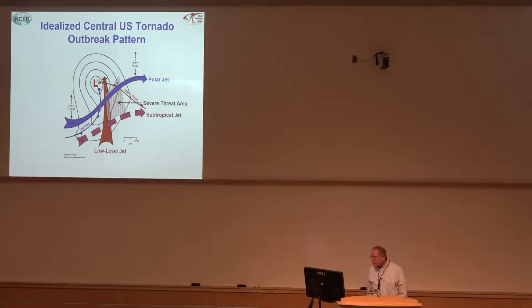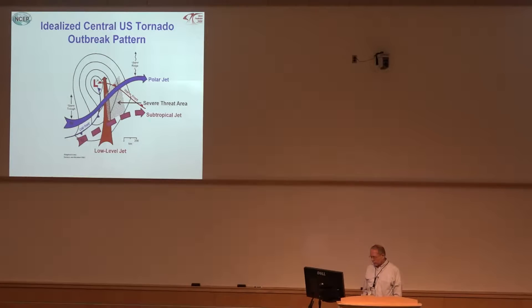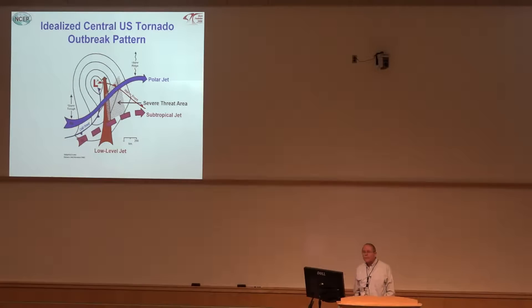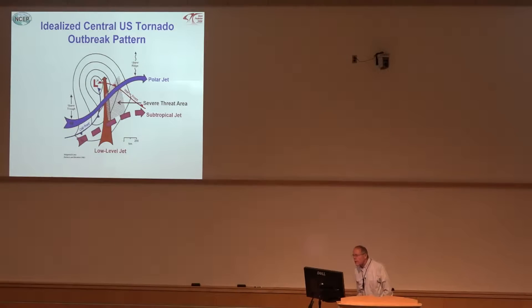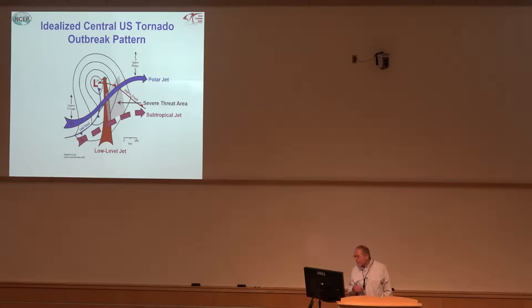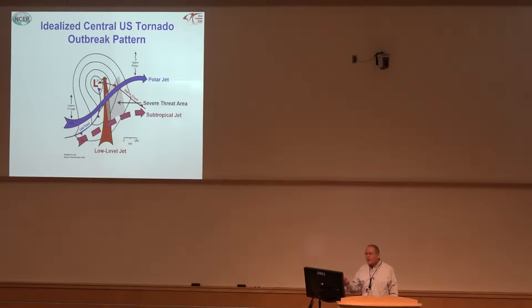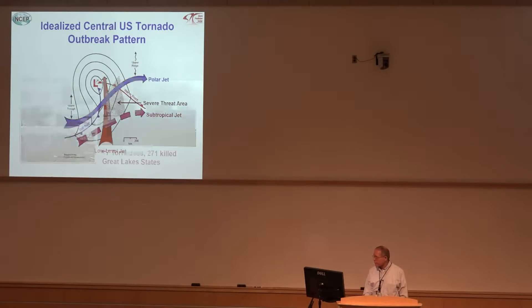Here's an idealized tornado outbreak pattern in the middle of the country: southerly low-level jet, southwesterly upper-level jet, perhaps a subtropical, within the warm sector, maybe near the warm front, ahead of the cold front. That's pretty common knowledge. Does it mean every time we get a pattern like that we get a tornado outbreak? Not necessarily — it depends on a lot of other factors, but this is how we recognize that with a particular pattern and the right environment, there's potential for more significant severe weather.